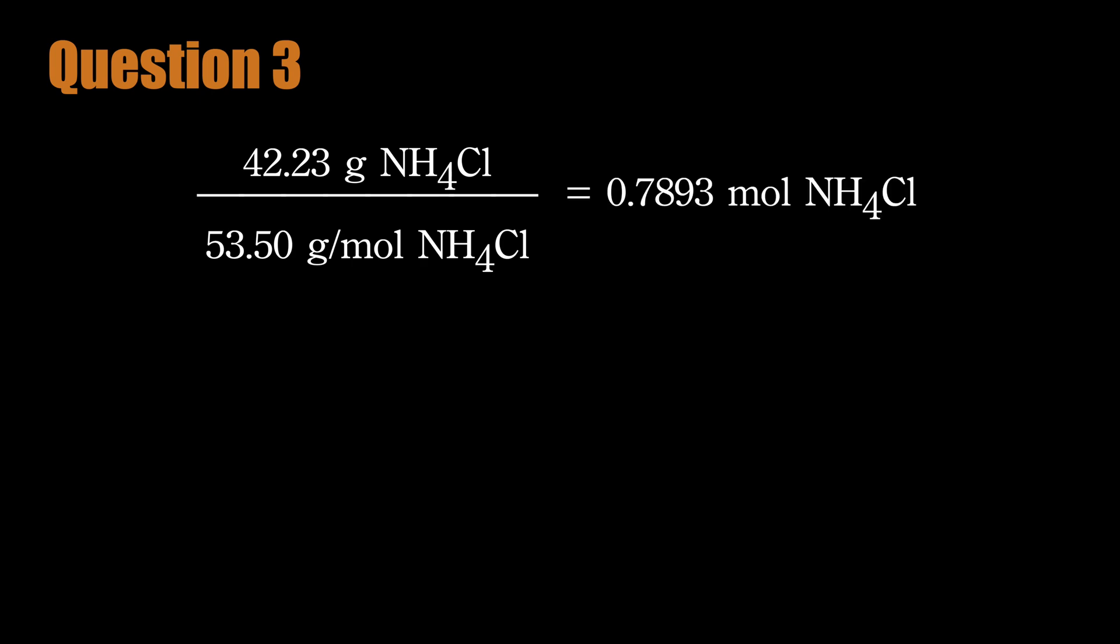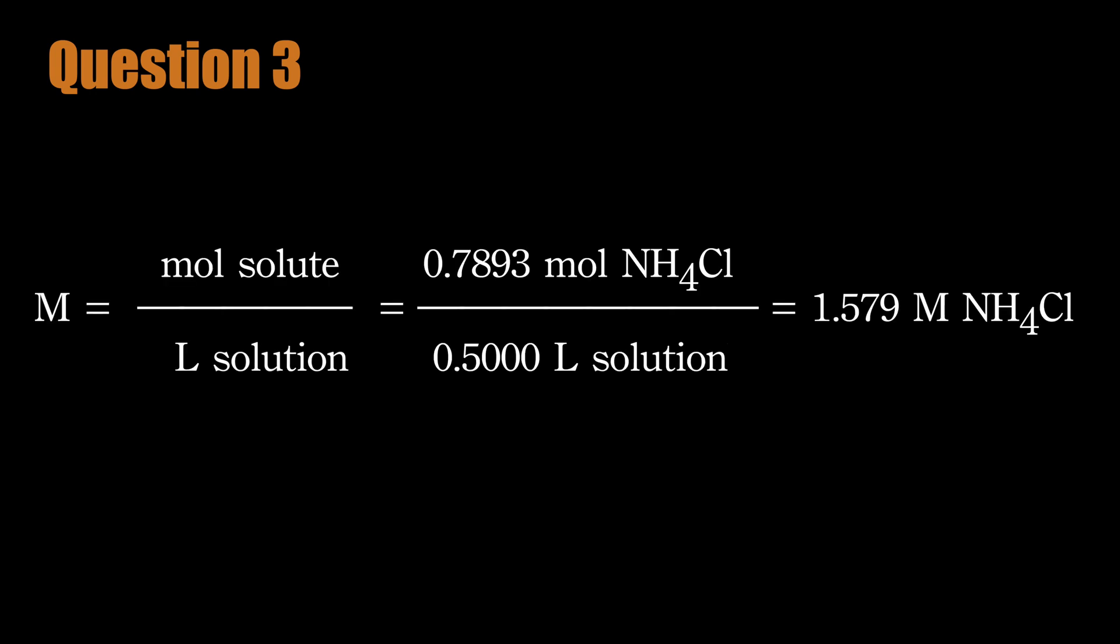We know the mass of ammonium chloride, the molar mass of the ammonium chloride, and the volume of the solution. Convert the mass of the ammonium chloride to the number of moles. Convert the given volume from milliliters to liters. Now substitute the known quantities into the equation and solve. The molarity is 1.579 molar, meaning that a liter of the solution would contain 1.579 moles of ammonium chloride.